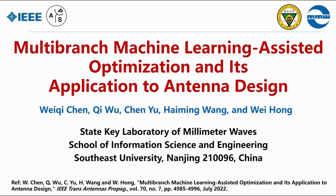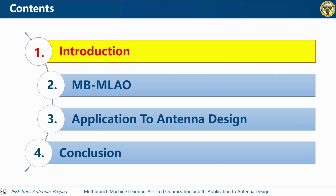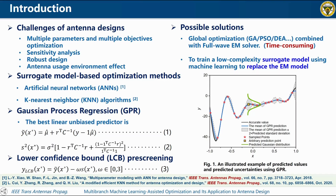This video will briefly introduce multi-branch machine learning assisted optimization and its application to antenna design. The talk is divided into four parts. Simultaneously considering the performance and the robustness of antenna design is a crucial step in electromagnetic design.